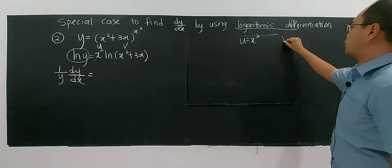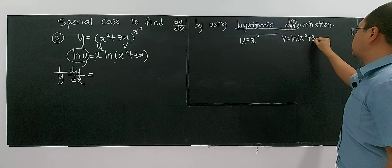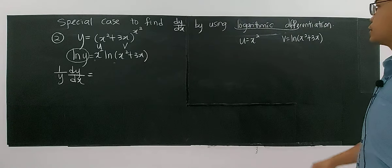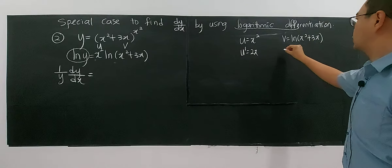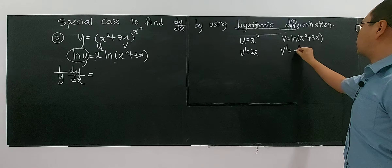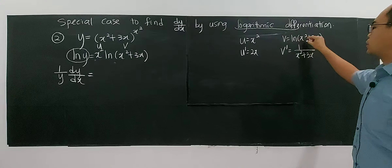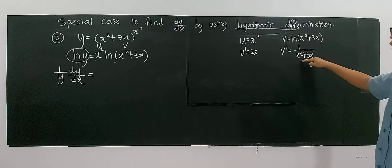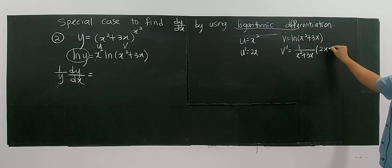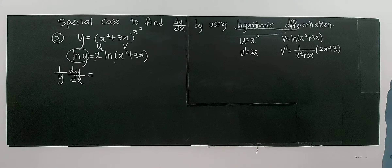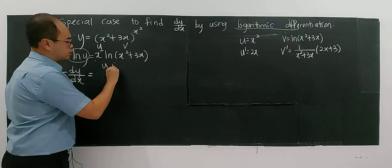For this type of case, we use logarithmic differentiation. One more example: y equals a quadratic function to the power of a quadratic function. As said, you use logarithmic differentiation, meaning you take ln of both sides. The purpose is so that you can bring the x-squared forward. Then it becomes a product of a quadratic and a logarithmic function.